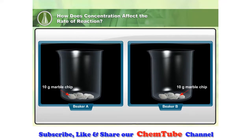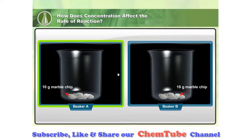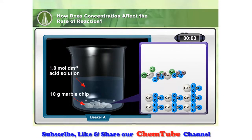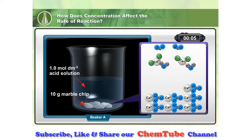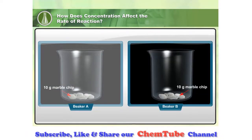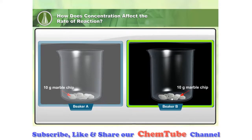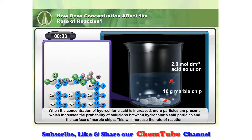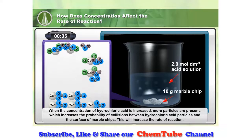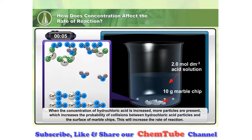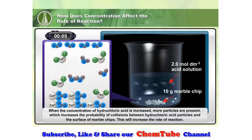Click on beaker A. What happens if we increase the concentration of hydrochloric acid? Click on beaker B. When the concentration of hydrochloric acid is increased, more particles are present, which increases the probability of collisions between hydrochloric acid particles and the surface of marble chips. This will increase the rate of reaction.